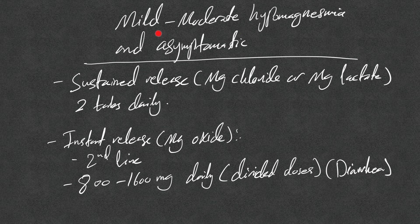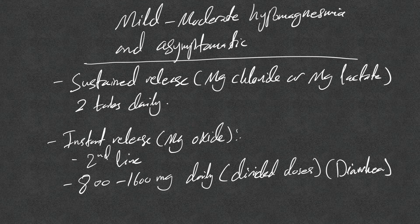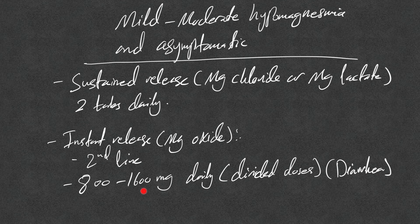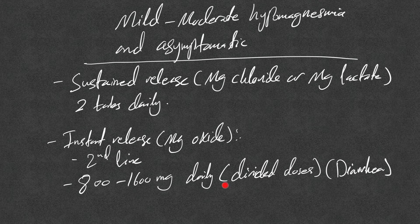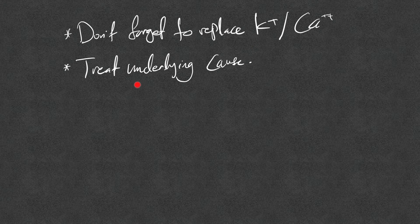For mild to moderate hypomagnesemia and asymptomatic, we pick sustained release first line: magnesium chloride or magnesium lactate. We give two tabs daily, or instant release magnesium oxide, which is second line if we cannot give sustained release or if it's not available, 800 to 1600 milligrams daily in divided doses like 400 milligrams twice daily or 800 milligrams twice daily, and remember main side effect will be diarrhea. Please don't forget to replace potassium and calcium if hypocalcemia and hypokalemia exist, and treat underlying cause of hypomagnesemia if identified.